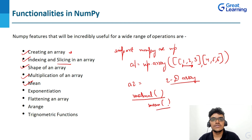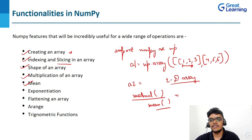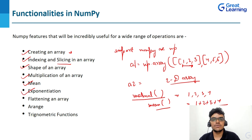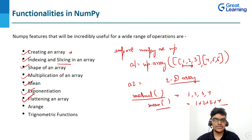So the mean of 1, 2, 3, 4 would be their sum divided by 4. Next, we have exponentiation — if you want to calculate exponentiation, you can use the exponentiation function. Next, we have flattening an array. If you have an n-dimensional array and want to put it into a single entity, we have the flatten function available in NumPy.